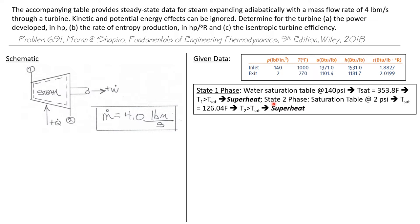For state two, if we look in the saturation table at 2 psi, the saturation temperature is 126.04 degrees Fahrenheit. And T2, which is 270 degrees Fahrenheit, is greater than the saturation temperature. So state two is also superheated.